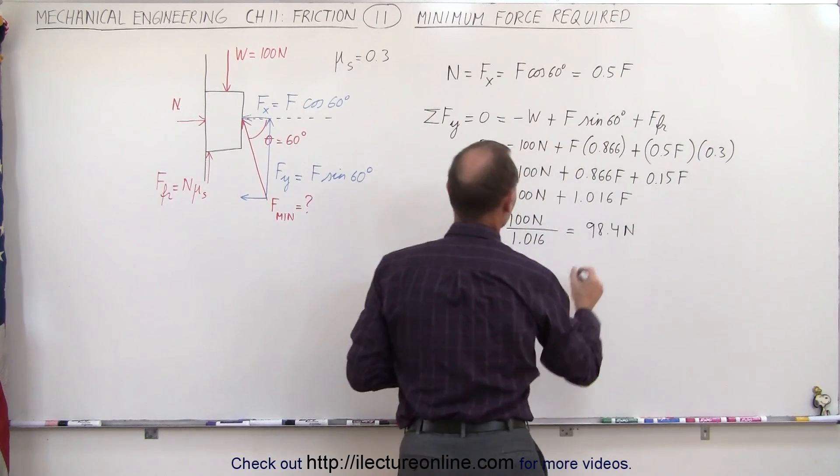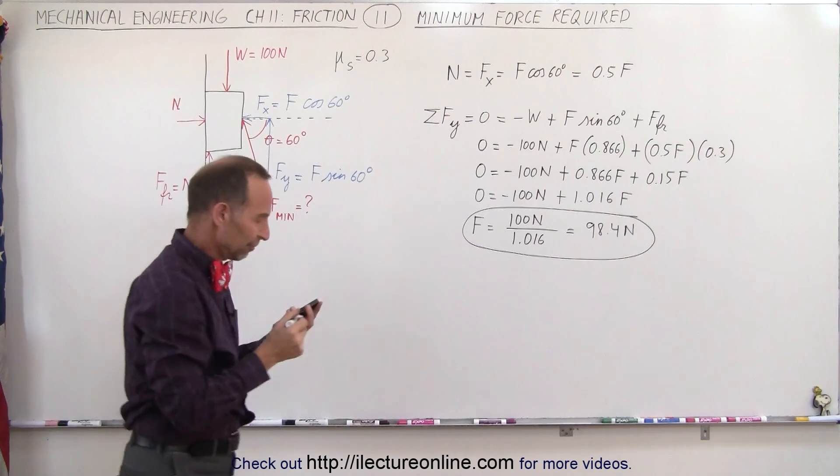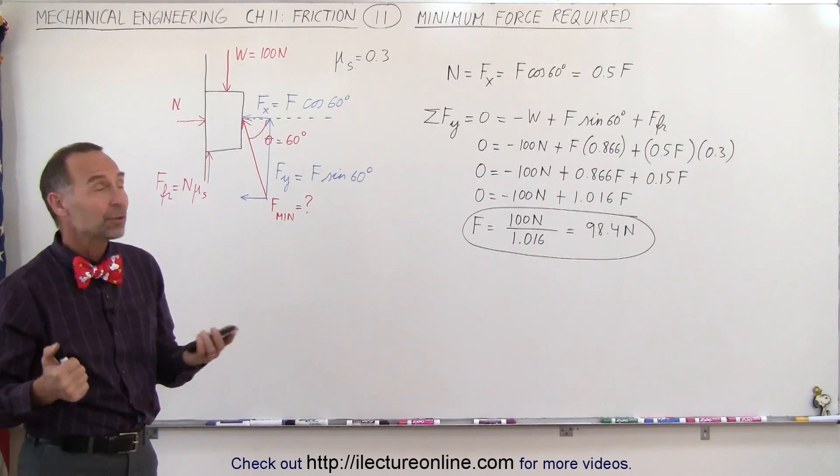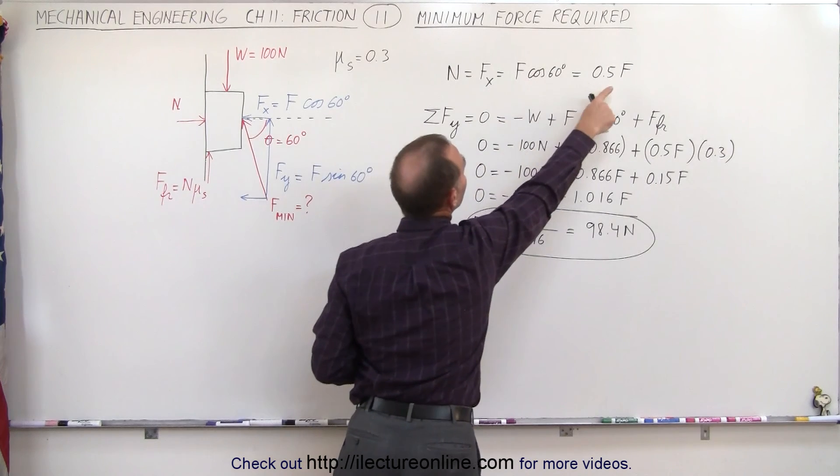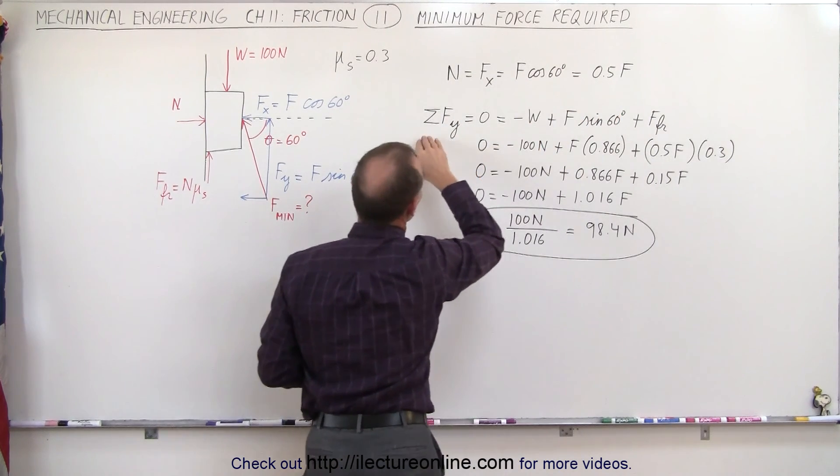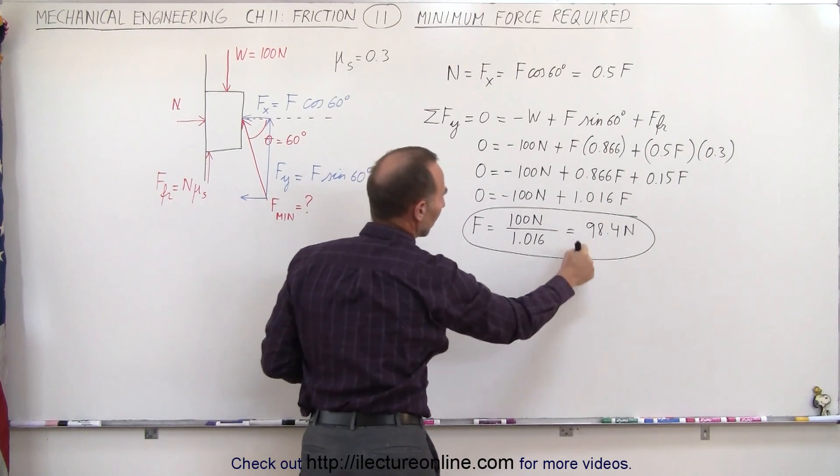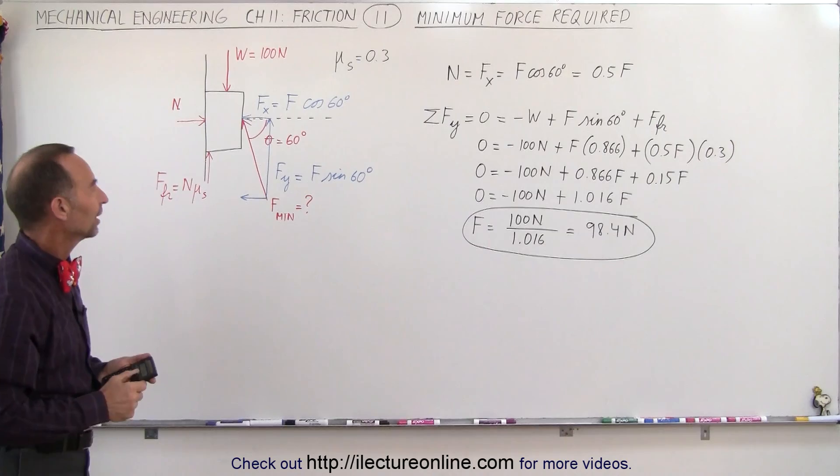And that is the minimum force required to keep the block from sliding. So that's how we do this problem: we first find the normal force in terms of the force applied, sum up all the forces in the x direction, then sum up all the forces in the y direction, and solve the two equations for F.